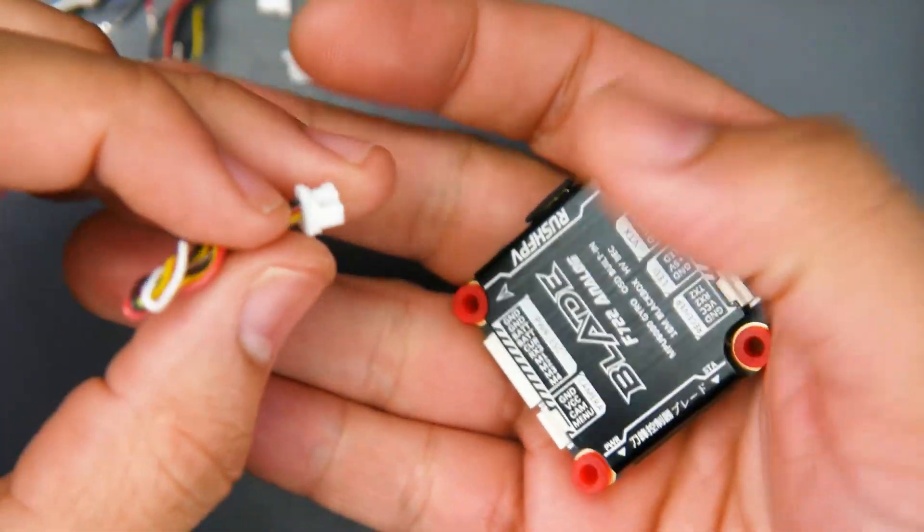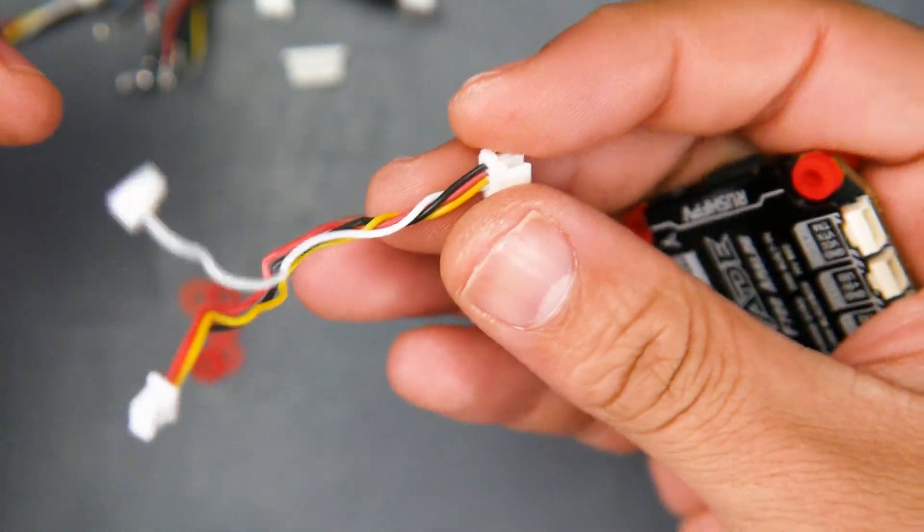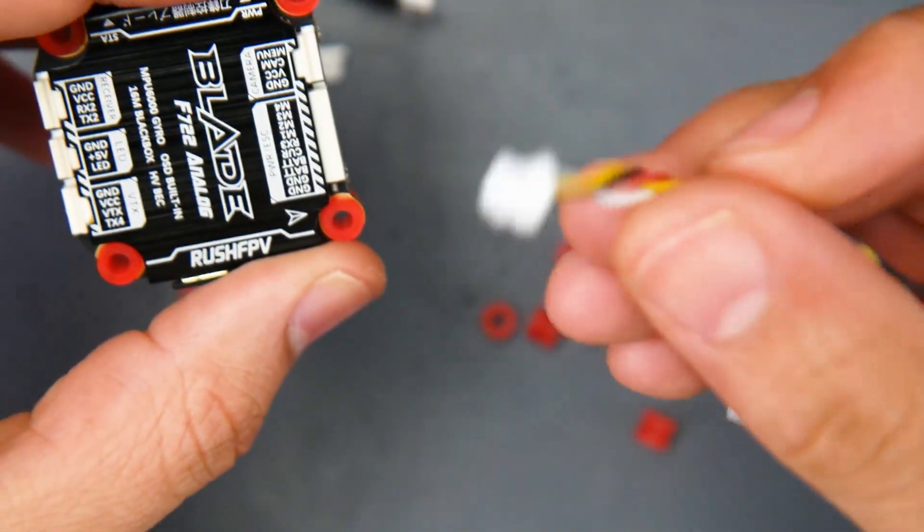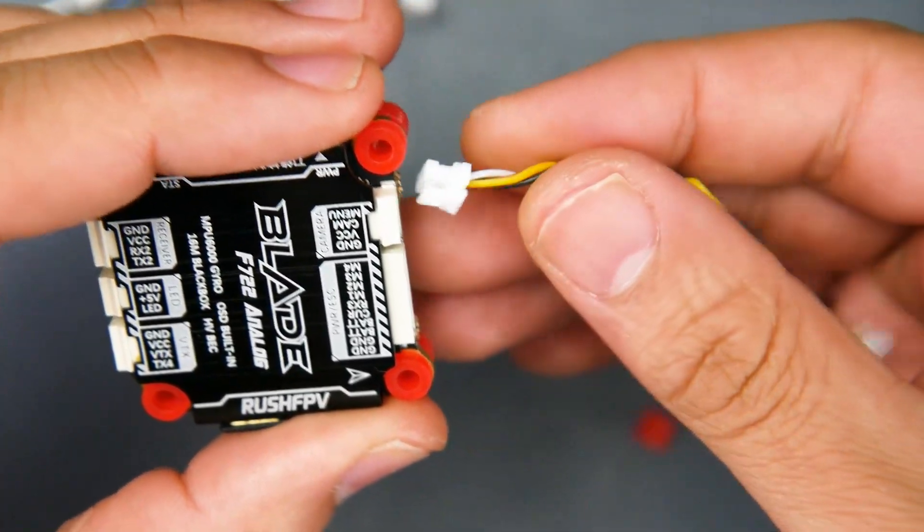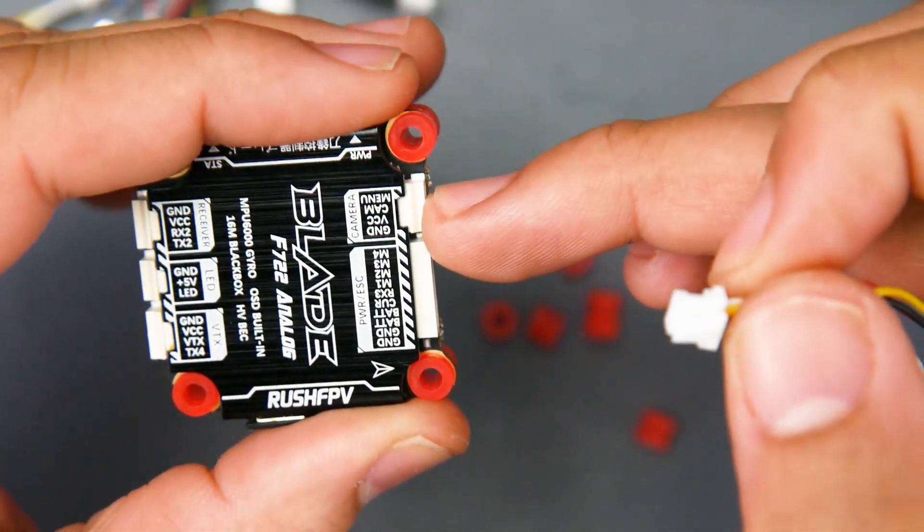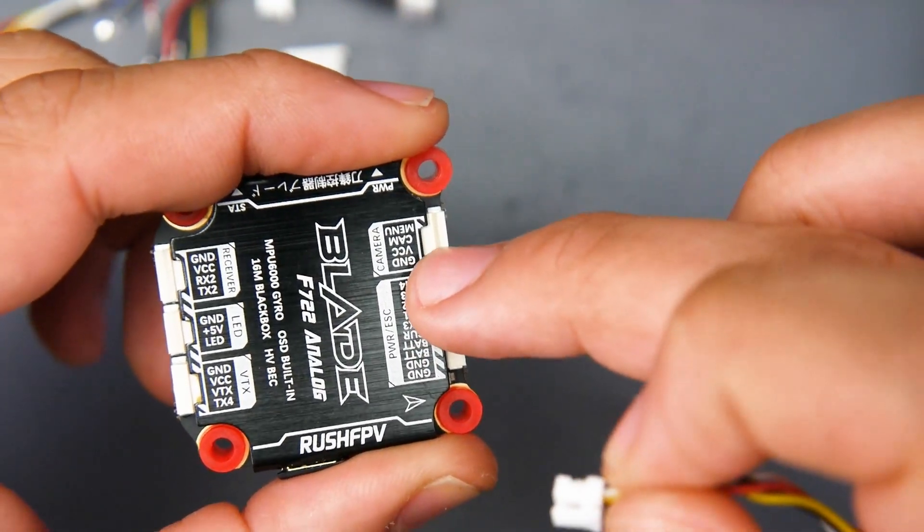Now, for a non-experienced user, it might be kind of confusing here to have a connector that looks like this. Believe it or not, this is the first time I've ever seen this done. So let's take a look at this real quick. So this is where our camera would go and we could choose the output power. And I'll show you how to do that.